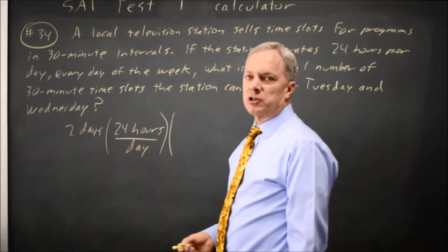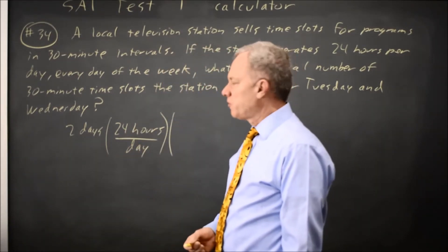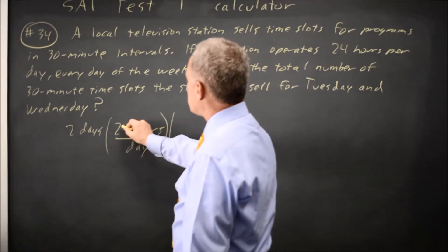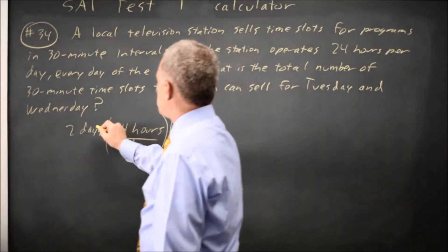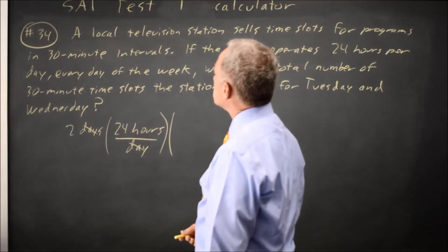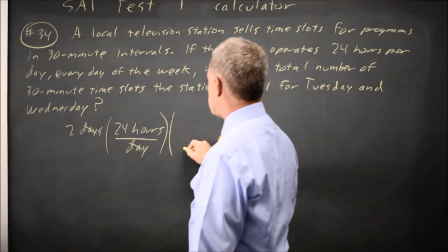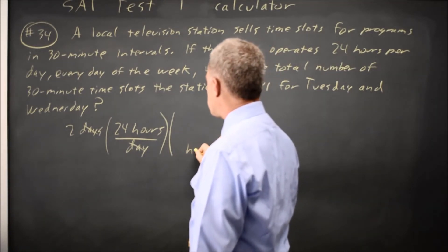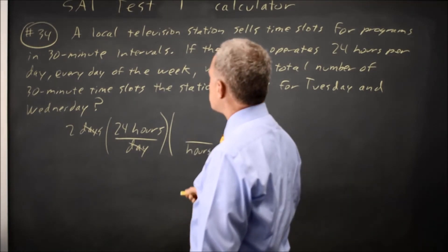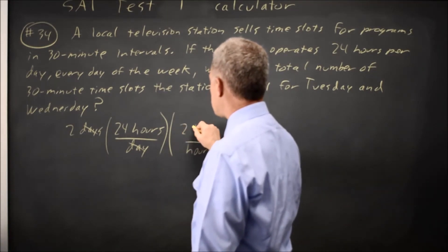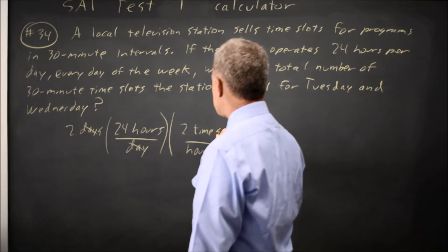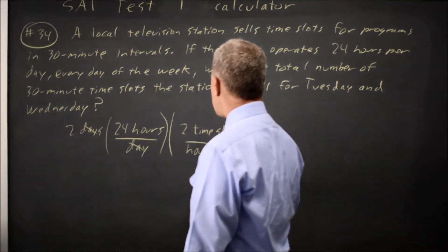Write a fraction where the numerator and denominator are equal or equivalent. Now I have days cancel, and I have the number of hours, but I want the time slots. So hours goes on the bottom so I can cancel that, and there are two time slots per hour.